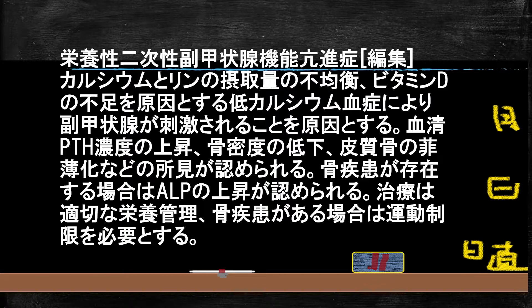種類の2つ目は、栄養性の二次性副甲状腺機能亢進症です。カルシウムとリンの摂取の不均衡およびビタミンDの不足が主な原因です。PTHの血液中の濃度上昇と骨密度の低下が起こります。